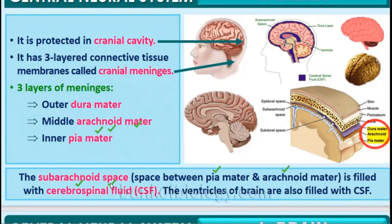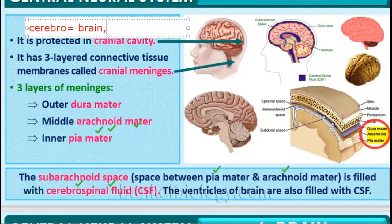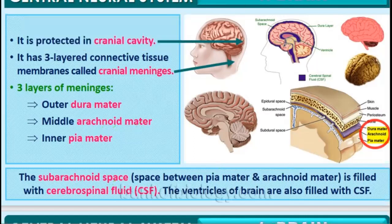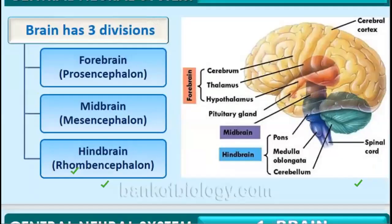The space filled between the pia mater and arachnoid mater is filled with cerebrospinal fluid (CSF). 'Cerebro' is the word used for brain and 'spinal' is the word for spinal cord. So cerebrospinal fluid is present inside both the brain and the spinal cord.